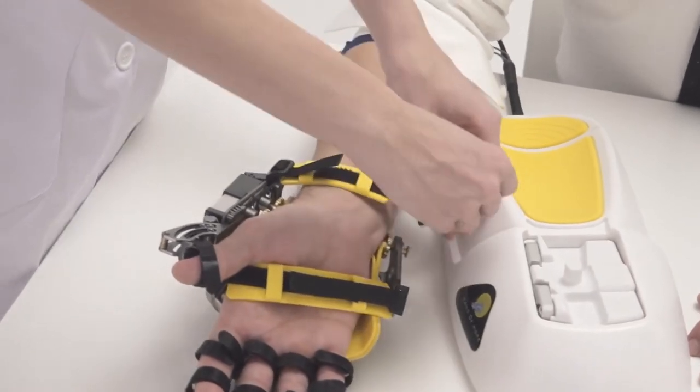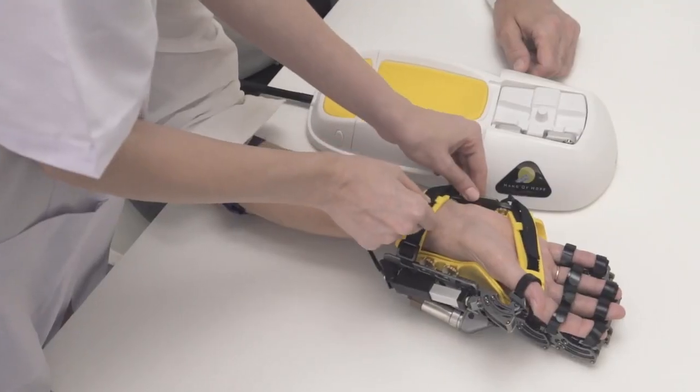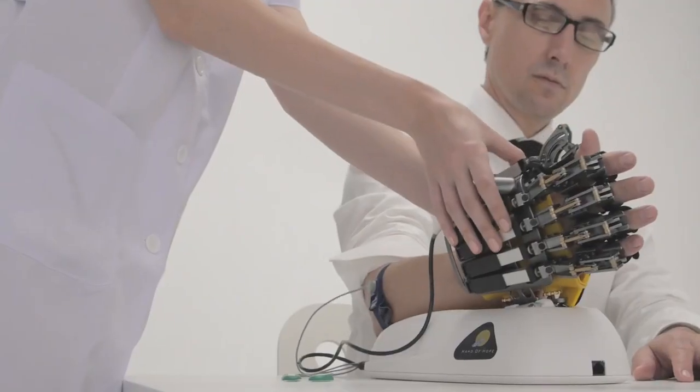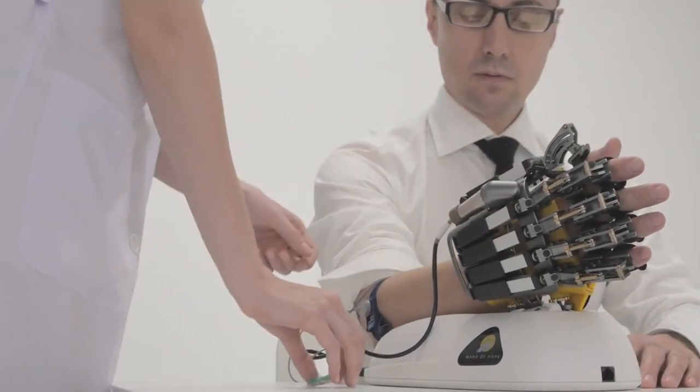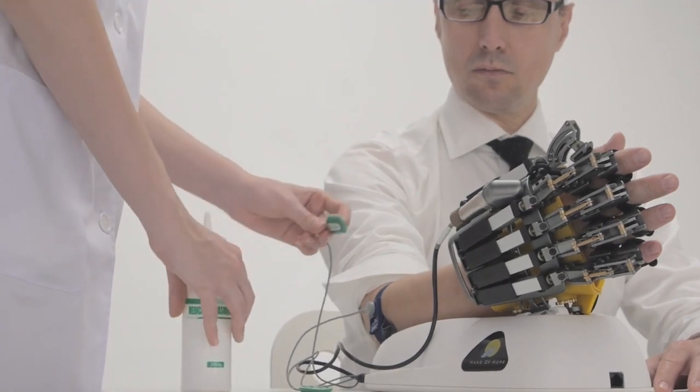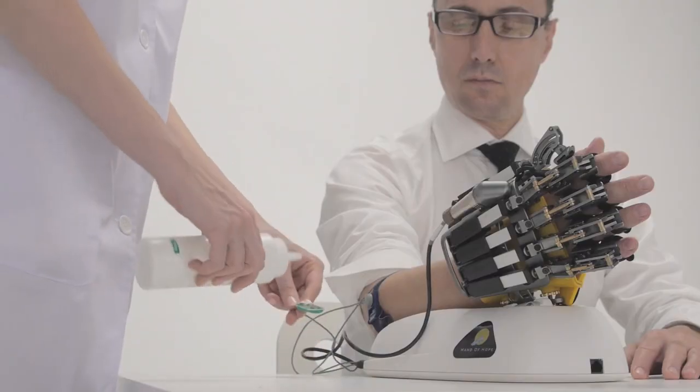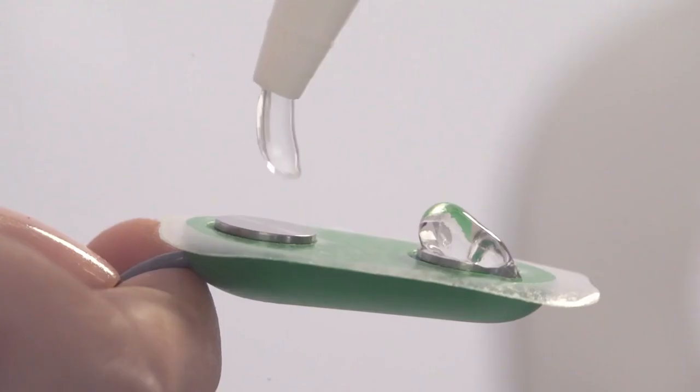Hand of Hope is relatively easy and quick to set up by following simple instructions. Rehab Robotics and Hong Kong Polytechnic University work together to develop it. The effectiveness of this patented technology is proven by clinical trials and published research papers.